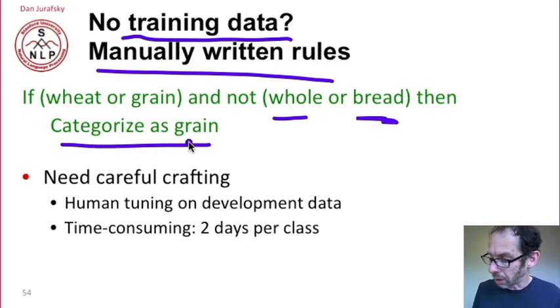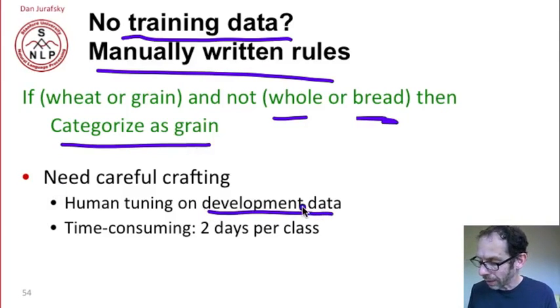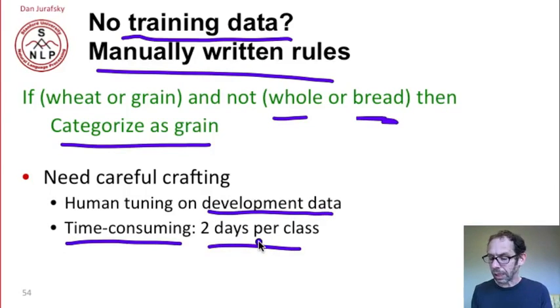Manually written rules need careful crafting. They have to be tuned on development data, and it's very time consuming because it can take days to write the rules for each class. But if we have no training data, this may be the right approach.